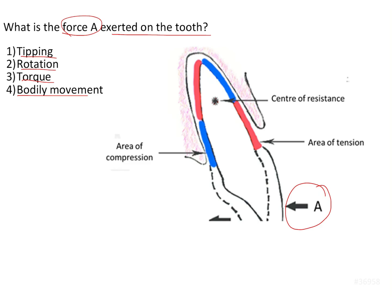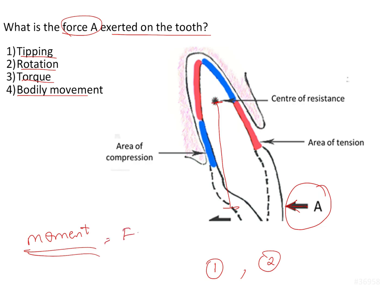What we can appreciate from this figure is that this force is being applied away from the center of resistance. That is number one. Number two, this force is a single force. So there is a single force acting away from the center of resistance. Whenever a single force acts on the tooth away from the center of resistance, the tooth is going to experience something known as a moment — which is the force multiplied by the distance of the force from the center of resistance.